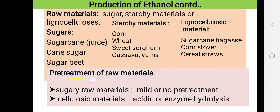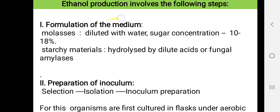The raw materials have to be subjected to pre-treatment. When sugary raw materials are used, they may require mild pre-treatment or no pre-treatment at all. In the case of cellulosic materials, pre-treatment is required — either acidic or enzymatic hydrolysis. The first step in production is formulation of the medium. If molasses is used, it has to be diluted with water so that the sugar concentration ranges between 10 to 18 percent. When starchy materials are used, they have to be hydrolyzed by dilute acids or by using fungal amylases.